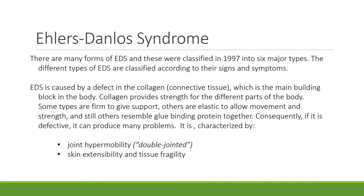So if collagen is defective, it can produce many problems. EDS is characterized by joint hypermobility, which means extreme movement in the joints — sometimes these people are said to be double jointed — and also by skin extensibility and tissue fragility.